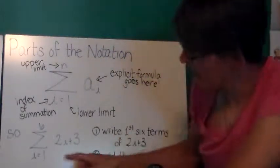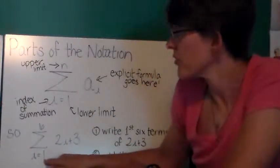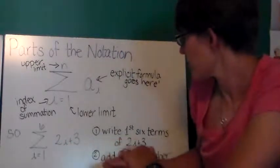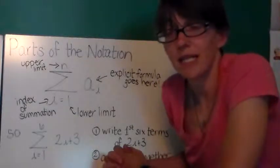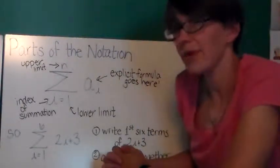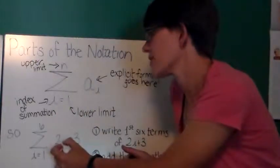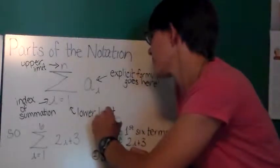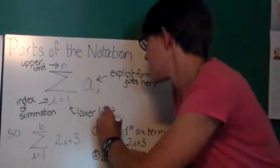Looking at a specific example, you see I have the sum as i goes from 1 to 6 of 2 times i plus 3. To evaluate this I would write the first six terms of 2i plus 3 and then add them together. So the first six terms: if i equals 1 this is 2 plus 3, that's 5. If i equals 2, 4 plus 3 is 7.